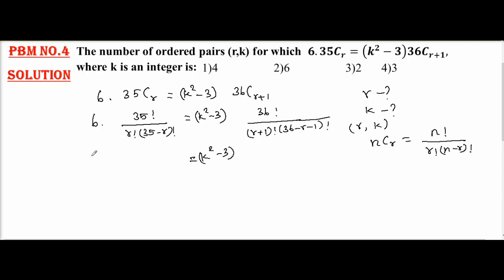Left hand side is 6 into 35 factorial by r factorial into 35 minus r factorial. Now the right hand side, I can write 36 factorial as 36 into 35 factorial. Similarly r plus 1 as r plus 1 into r factorial. And this becomes 36 minus 1 is 35, so 35 minus r factorial.